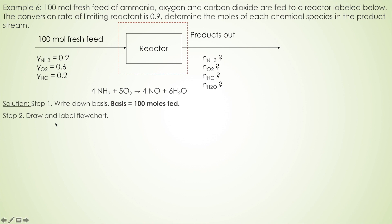Step two: draw and label the flowchart. In this problem, the flowchart is already given, so we just have to draw the system boundary. In this way, we know there is a material exchange — material flows in from here and flows out from here.